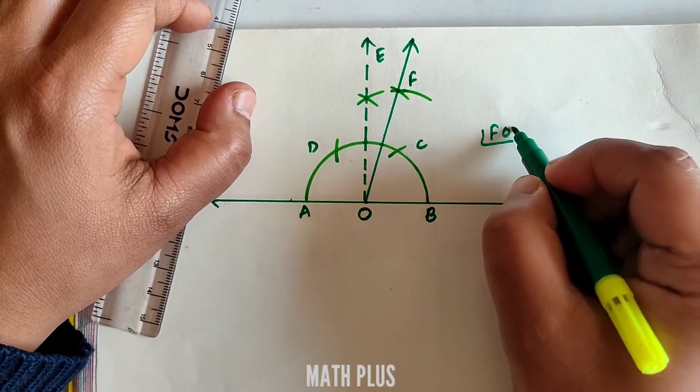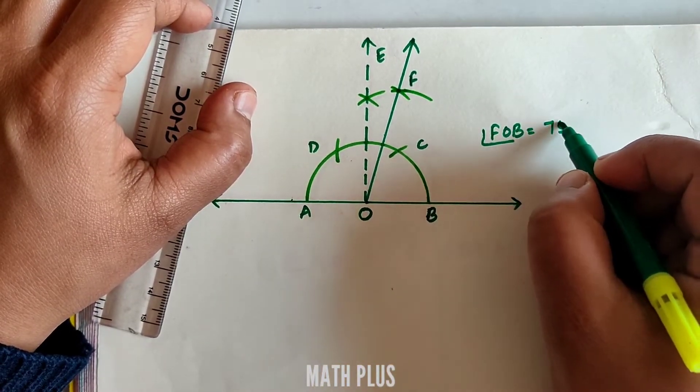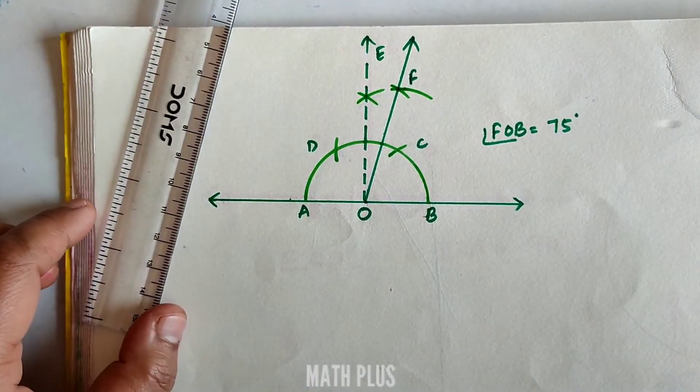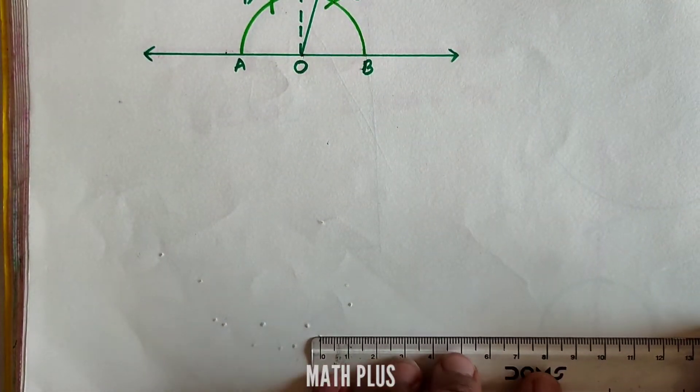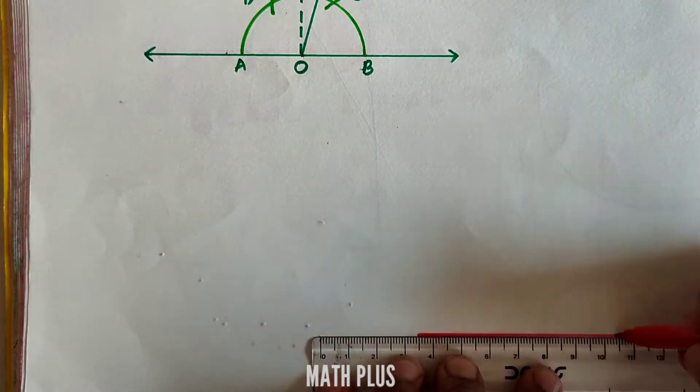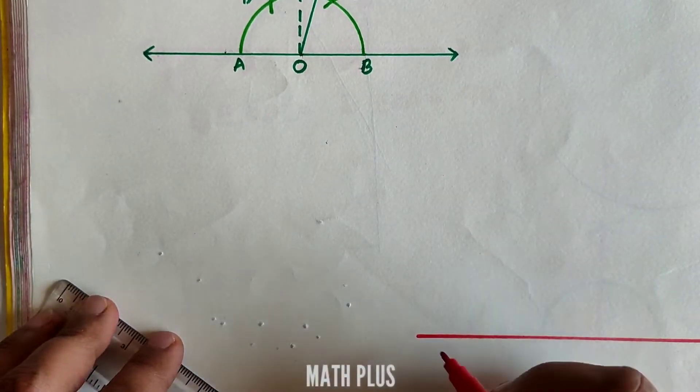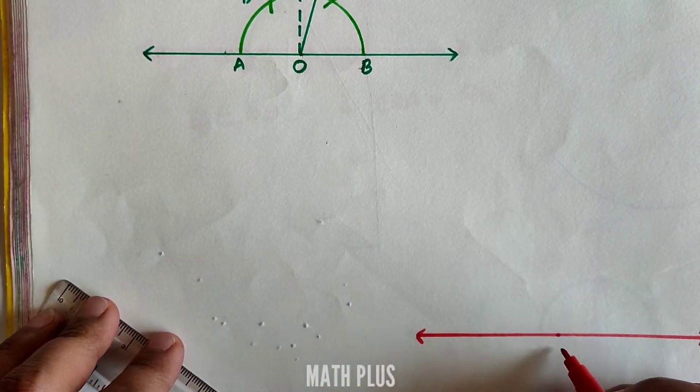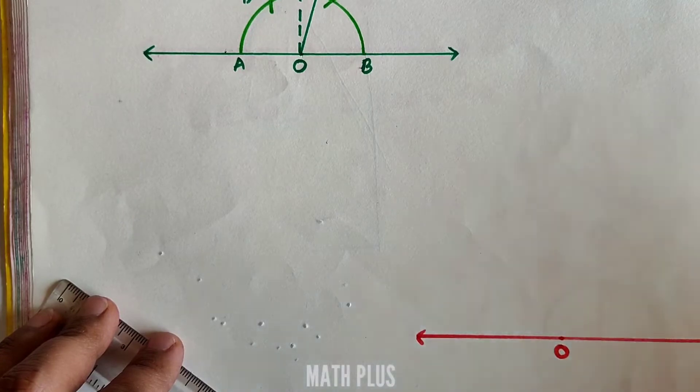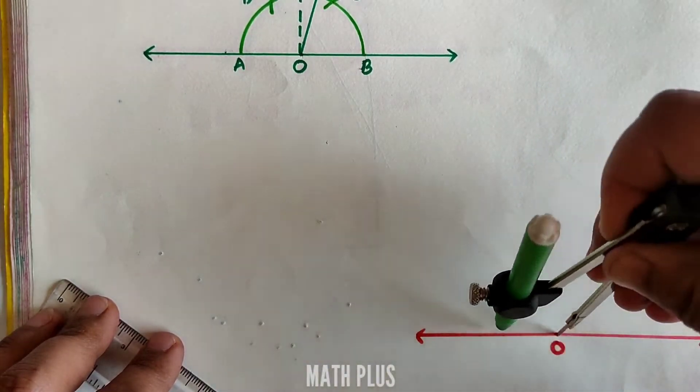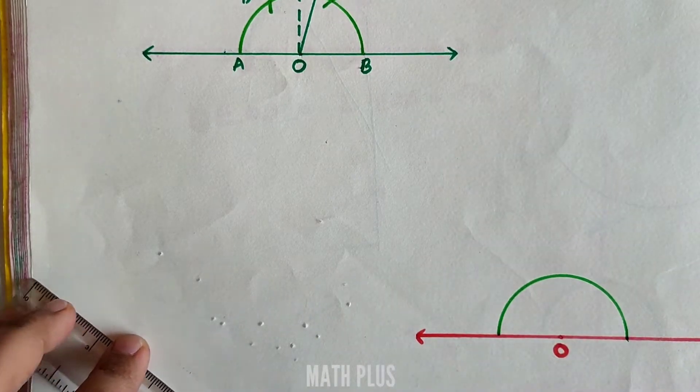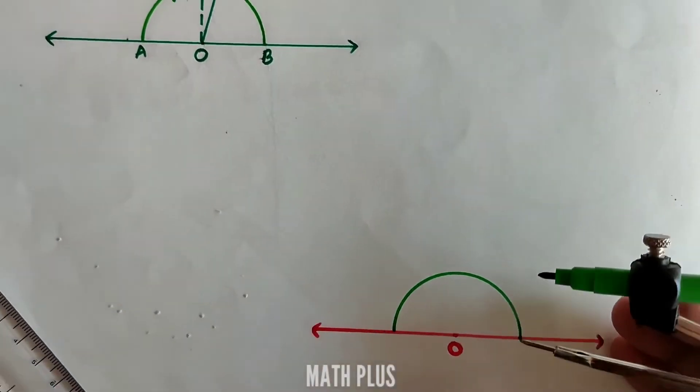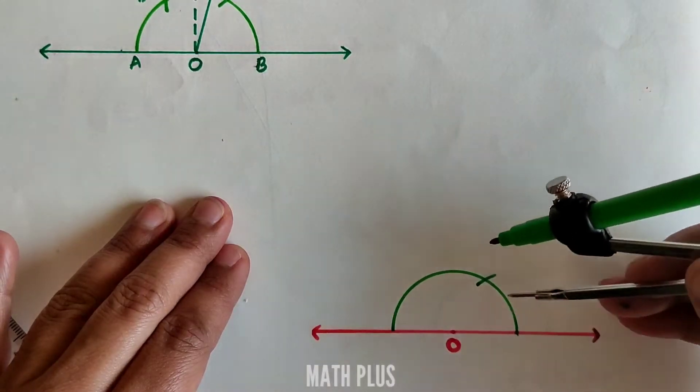Let us now construct the angle of 105 degrees. Draw a line with a point O on it. Using your compass, open a certain radius and draw a semicircle above the line.